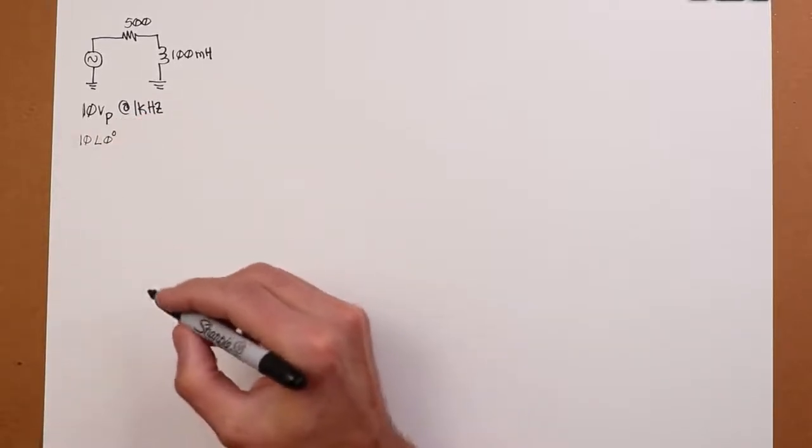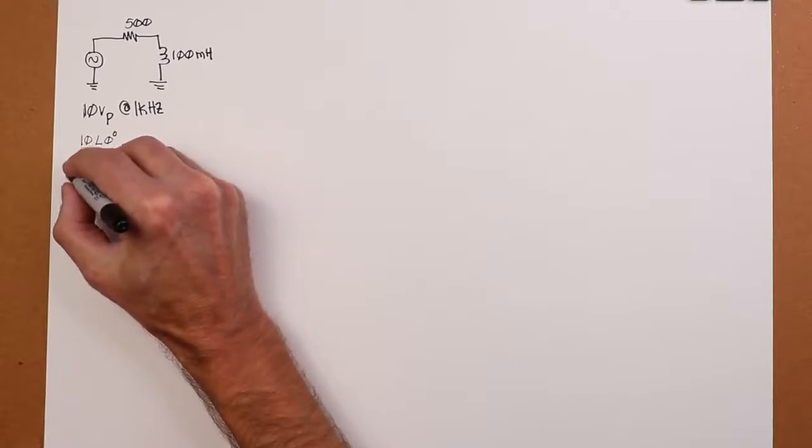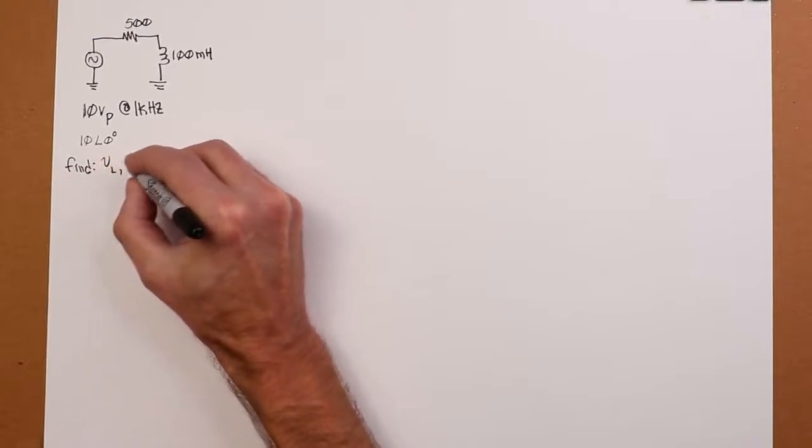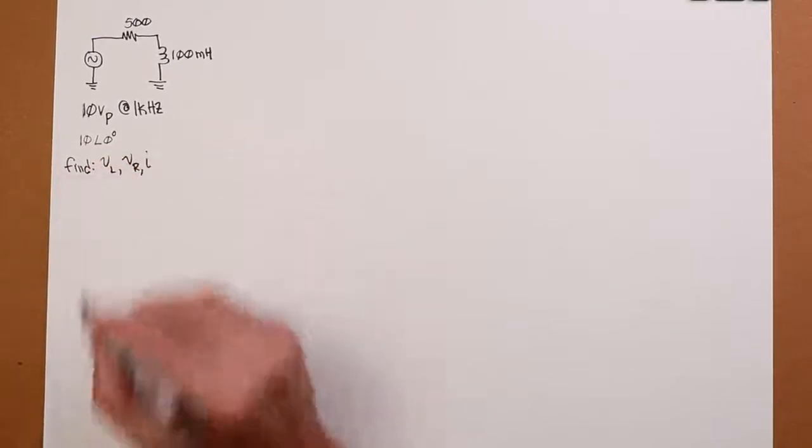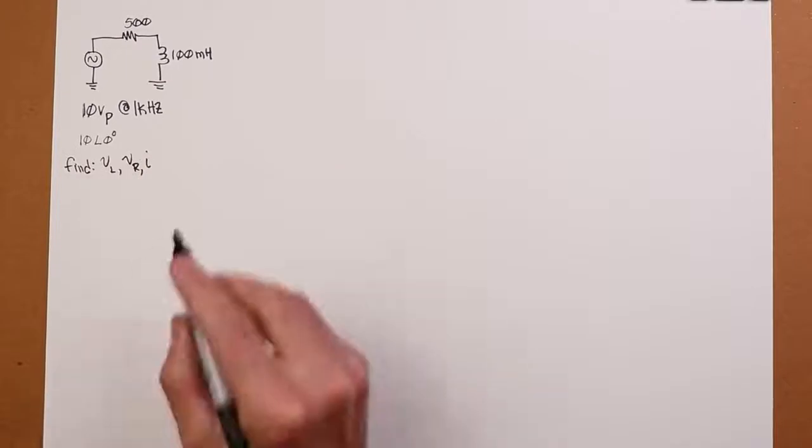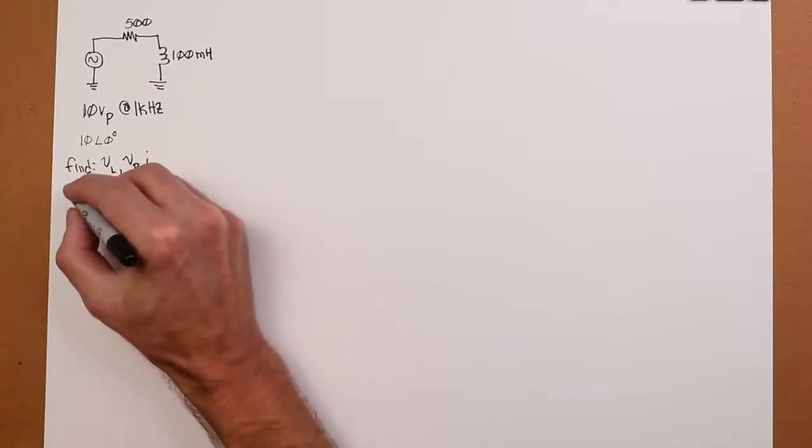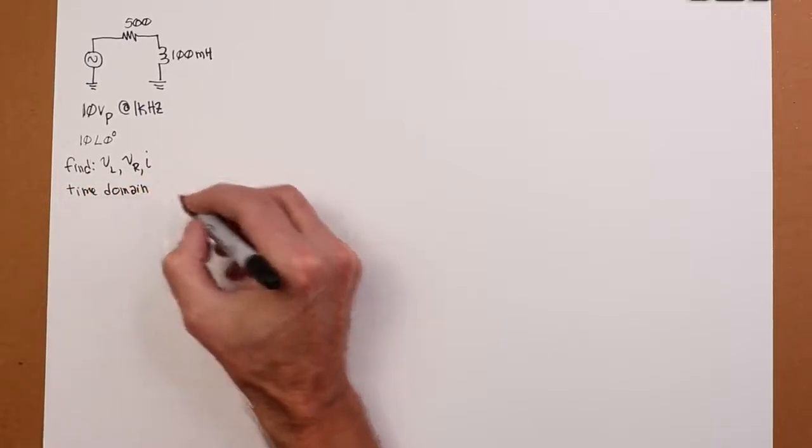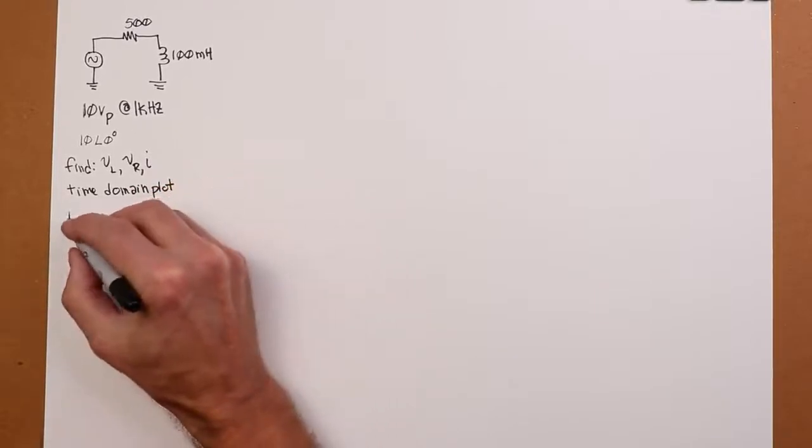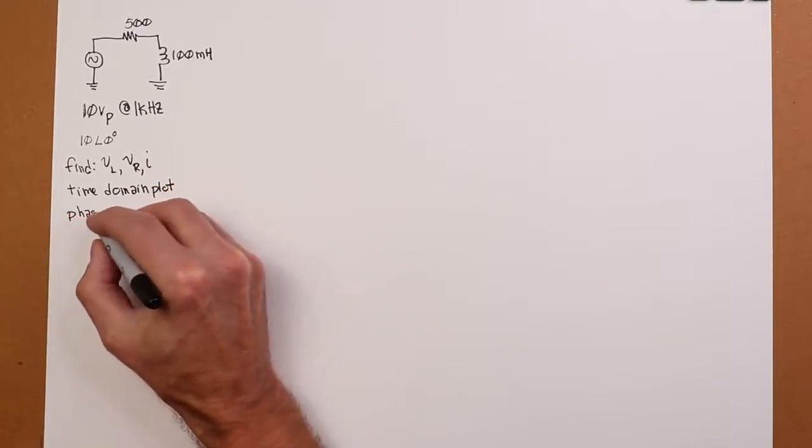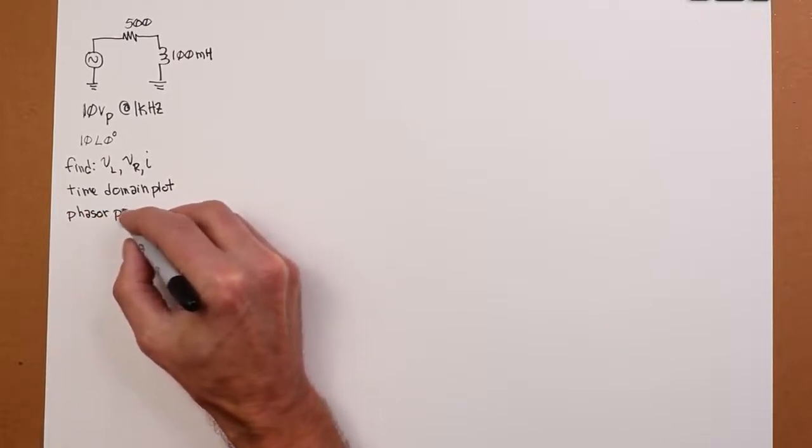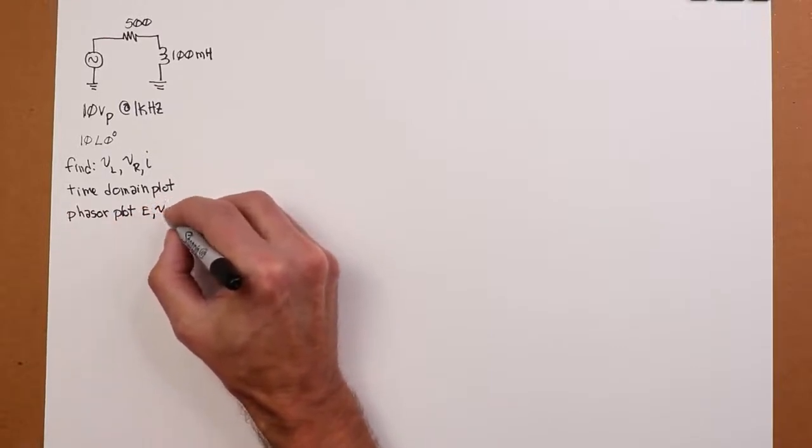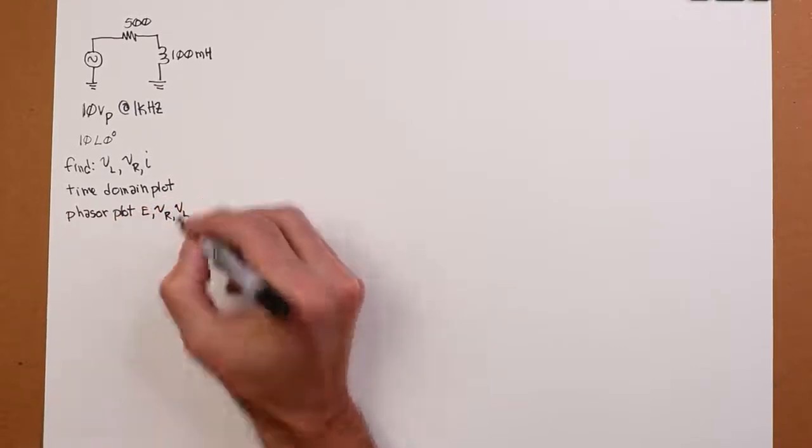In other words, we're saying this is 10 volts at an angle of 0 degrees. So what are we looking for? We would like to find in this circuit the voltage across the inductor, the voltage across the resistor, the circulating current. And we would like to do a time domain plot, in other words, what we would see on an oscilloscope. And we would also like to do a phasor plot, which is a more compact way of looking at this, for the voltages.